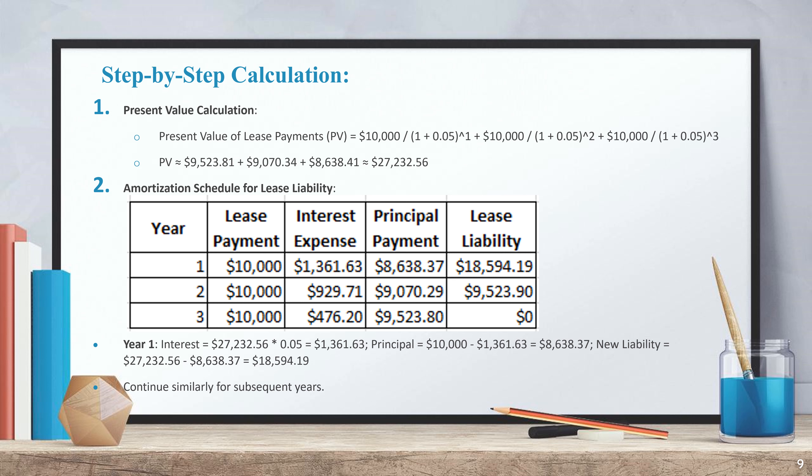Now let's look at the amortization schedule for lease liability. In year one, interest equals $27,232.56 times 0.05, which equals $1,361.63. Principal equals $10,000.00 minus $1,361.63, which equals $8,638.37.